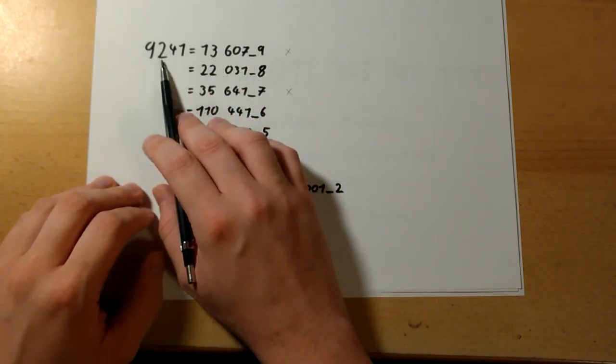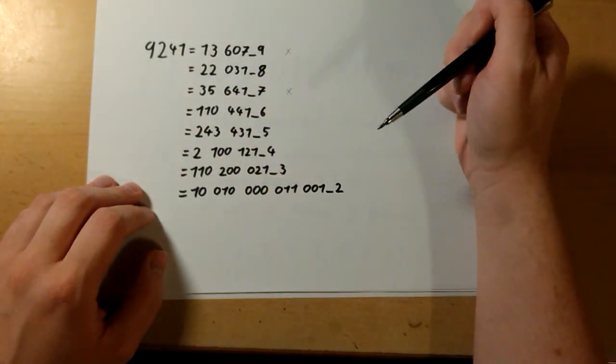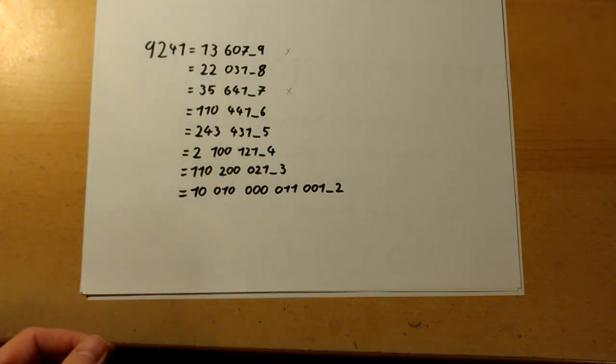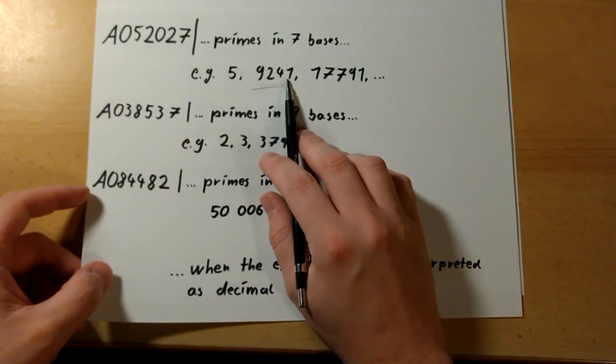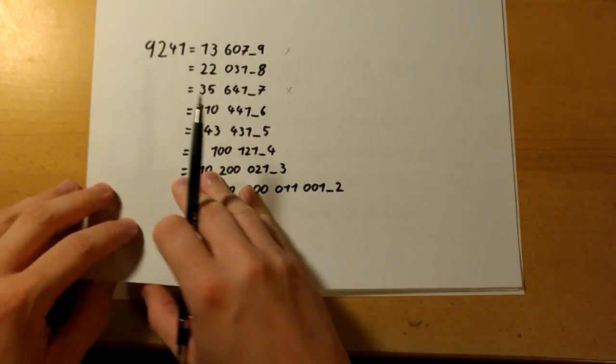For example, in base 9 we have to write 13607, which has the same value as this number. And if you look at all those numbers, seven of those are prime, which is exactly what this sequence told us. This is not what I wanted.